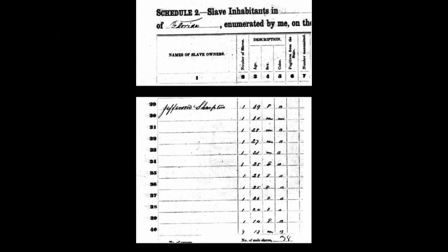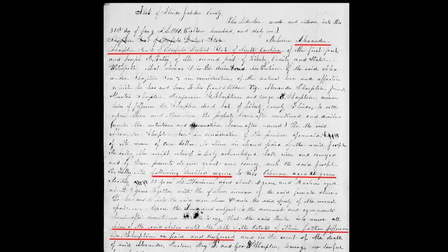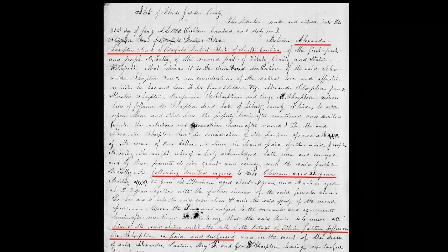The genealogists did further research. Jefferson Sharpton died shortly after the slave schedule was created, leaving debts. His father Alexander Sharpton lived in Edgefield, South Carolina. Alexander sent five of his enslaved people — including Coleman — to Florida to be hired out to pay off his son's debt.